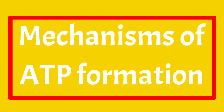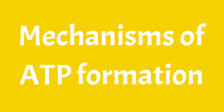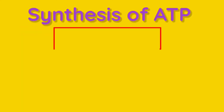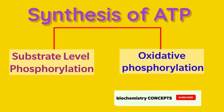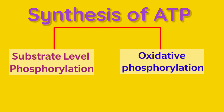This video is about the mechanisms responsible for the formation of ATP. ATP is formed by two different mechanisms: one is substrate level phosphorylation and the other is oxidative phosphorylation. Substrate level phosphorylation is the minor source of ATP, whereas oxidative phosphorylation is the major source which supplies ATP.